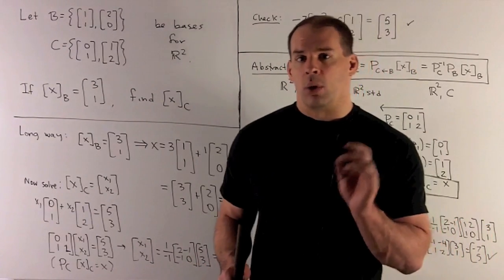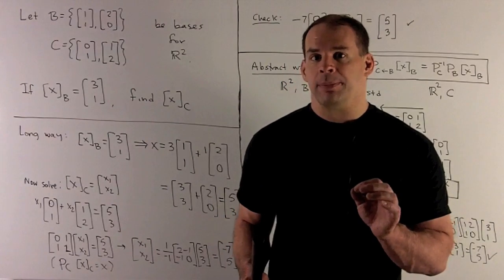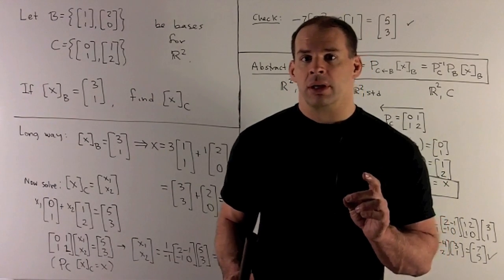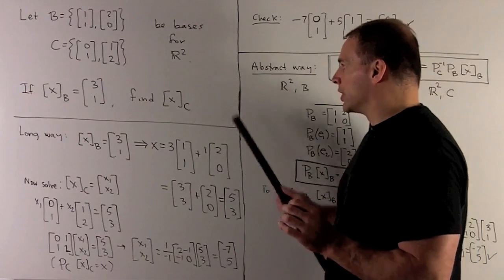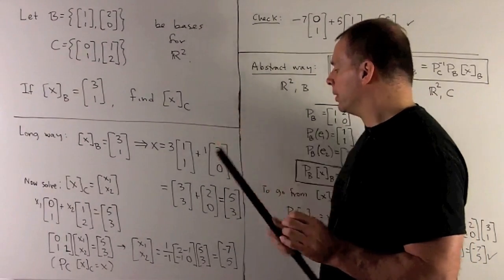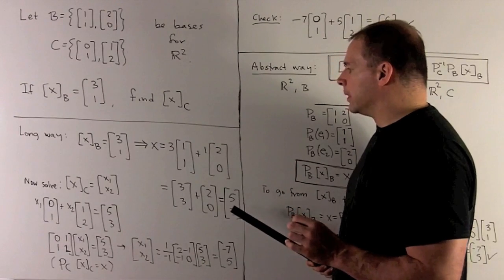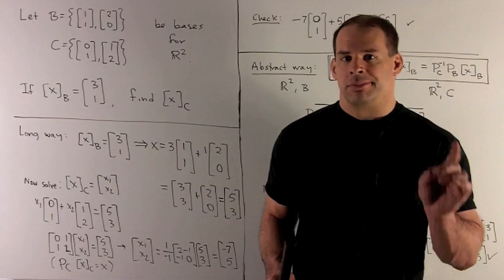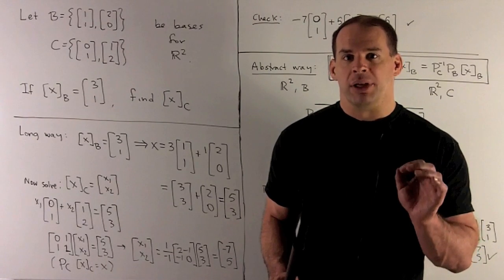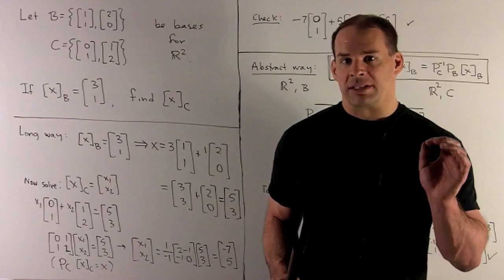To get coordinate vector for X with respect to C, we're going to need to work backwards. Now, we already know what X is in terms of the standard basis, so that's what we usually work with with R2, so that's going to be [5,3]. So we're just going to set up our equations for a linear combination, solve our coefficients, and then that builds X with respect to C.